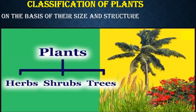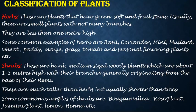Now let's classify the plants on the basis of their size and structure. Plants are divided basically into herbs, shrubs and trees. Let's find out what are herbs. These are plants that have green, soft and frail stems. Usually these are small plants with not many branches. They are less than one meter high. Some common examples of herbs are basil, coriander, mint, mustard, wheat, paddy, maize, grass, tomato and seasonal flowering plants.